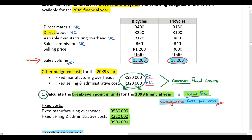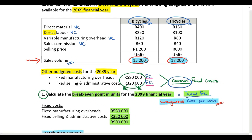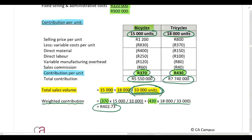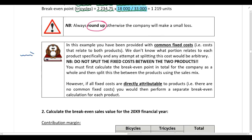Where you are given common fixed costs that relate to both products, first calculate the break-even point for the company as a whole, then use the sales mix to split that between the two products. Do not split common fixed costs and perform two separate break-even calculations. However, if the question gives fixed costs that are directly attributable to each product — with no common fixed costs — then it is correct to perform two separate break-even calculations.